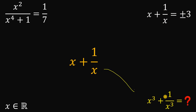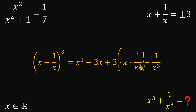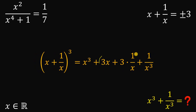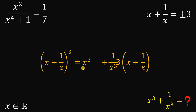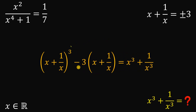Using x plus one over x, we can now get x cubed plus one over x cubed. If we cube x plus one over x, we get x cubed plus three times x squared times one over x plus three times x times one over x squared plus one over x cubed. Simplifying: x squared times one over x is just x, and x times one over x squared is just one over x. Factoring out three, and rearranging, we find x cubed plus one over x cubed equals x plus one over x, all cubed, minus three times x plus one over x.